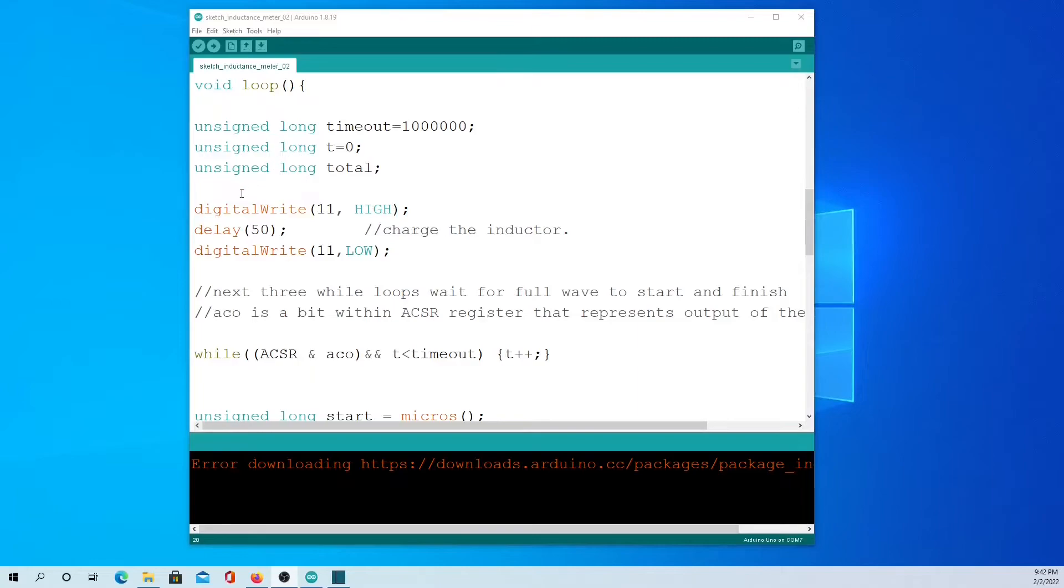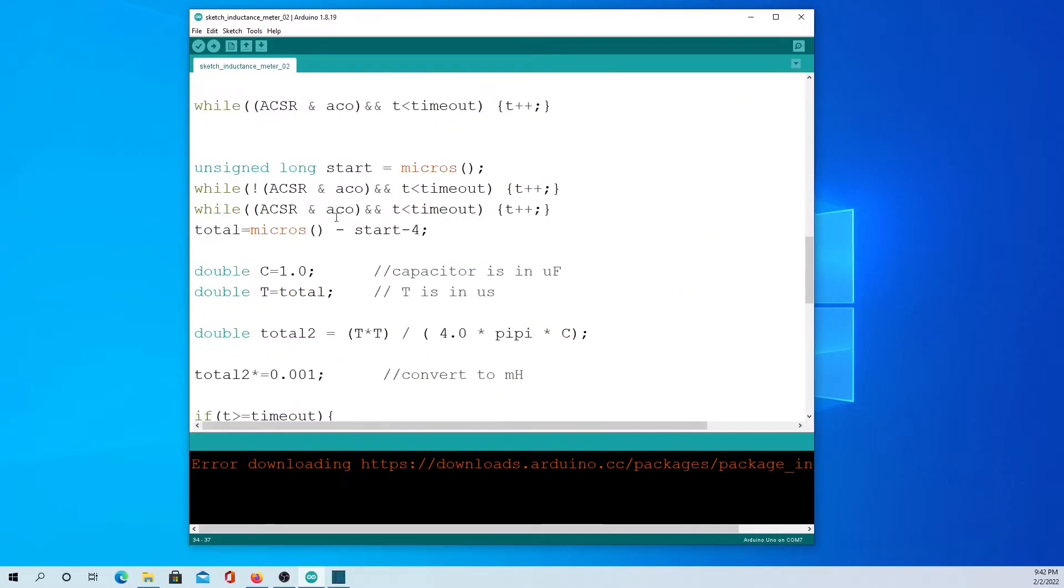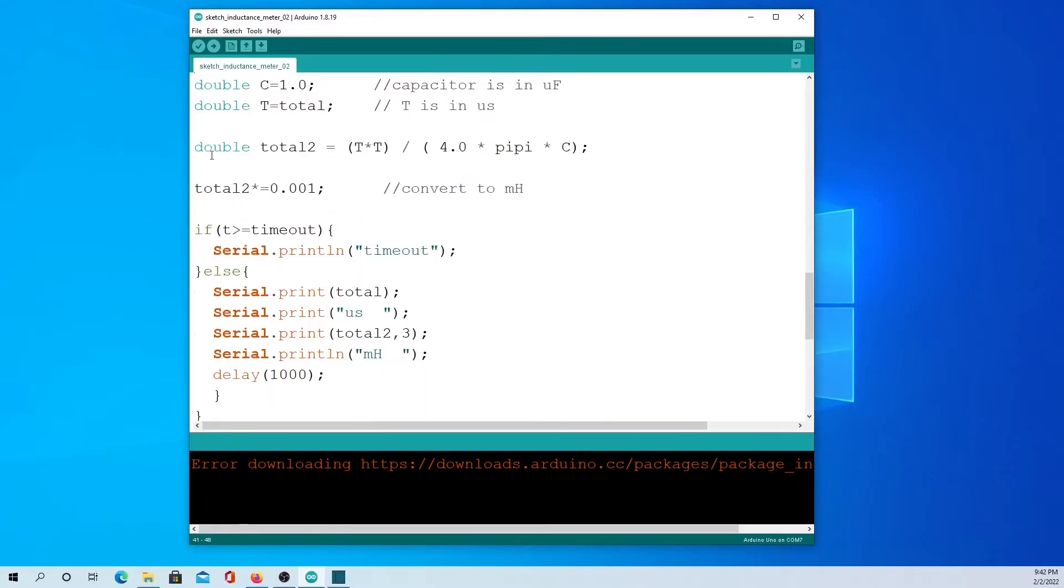In the main loop we charge the inductor, then we wait for one full oscillation. This is the code that waits for one full oscillation. Calculate the inductance and we print it on the serial monitor.